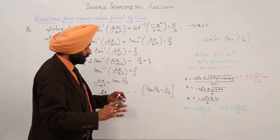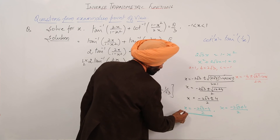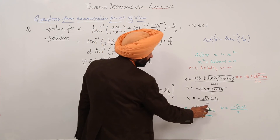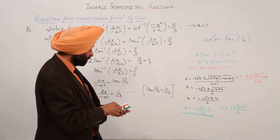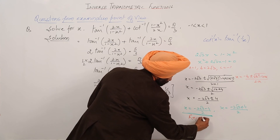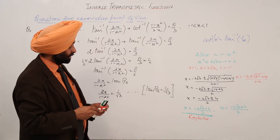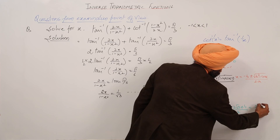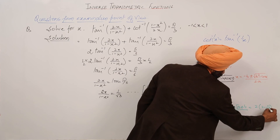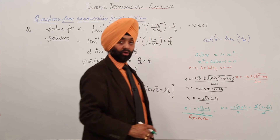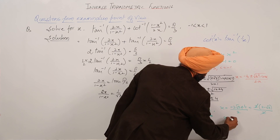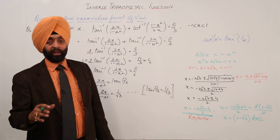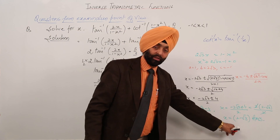Now, x must fall between minus 1 and 1. The first value has gone beyond negative, so this part will be rejected. Solving the second part, taking 2 common, we get 2(2 minus root 3) upon 2, and 2 cancels. So x equals 2 minus root 3. You can leave the answer here, or write it as 2 minus 1.73, but it is good to leave your answer as 2 minus root 3.